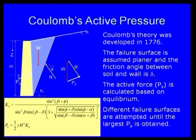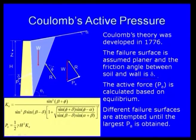In Rankine's case, the wall is assumed to be a smooth wall, so the friction angle between the wall and the soil is not taken into consideration. In Coulomb's theory, the friction angle between soil and wall is taken as delta. The active earth pressure is calculated based on equilibrium — they take a planar failure surface, consider the weight of the soil and the active earth pressure resultant PA, and make a force polygon to satisfy equilibrium conditions.